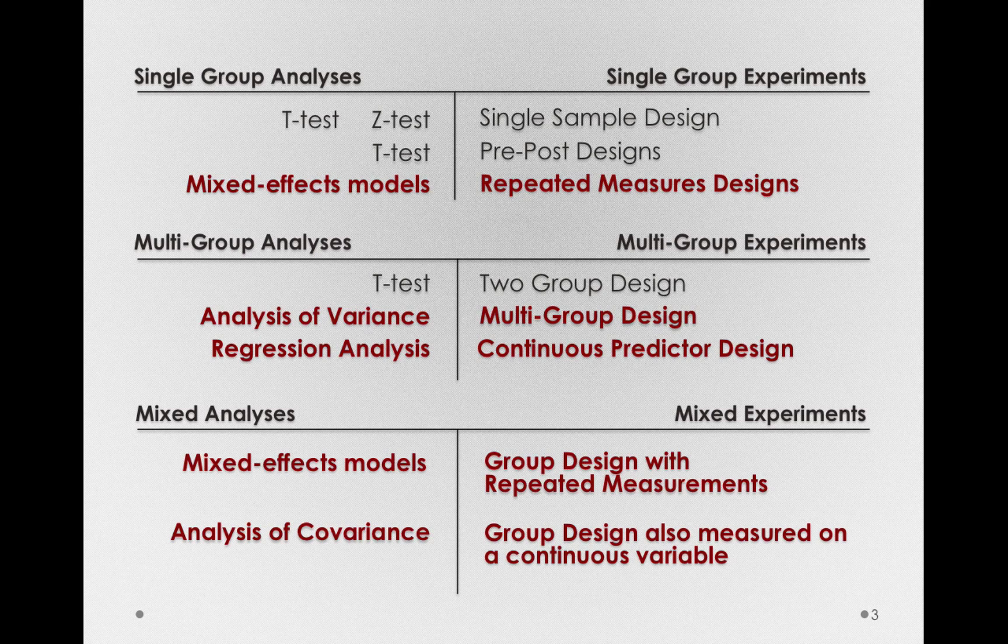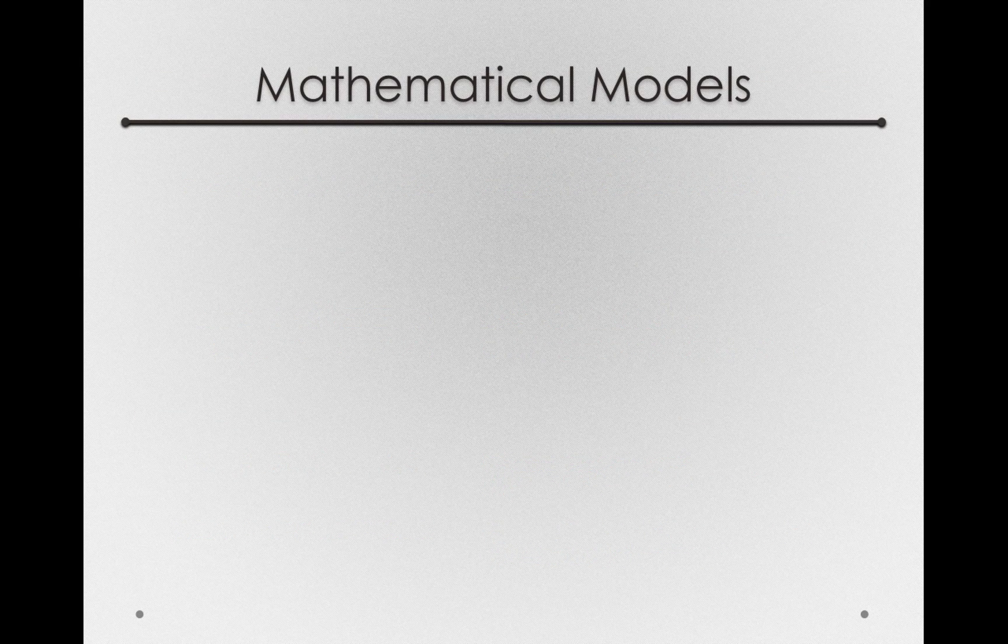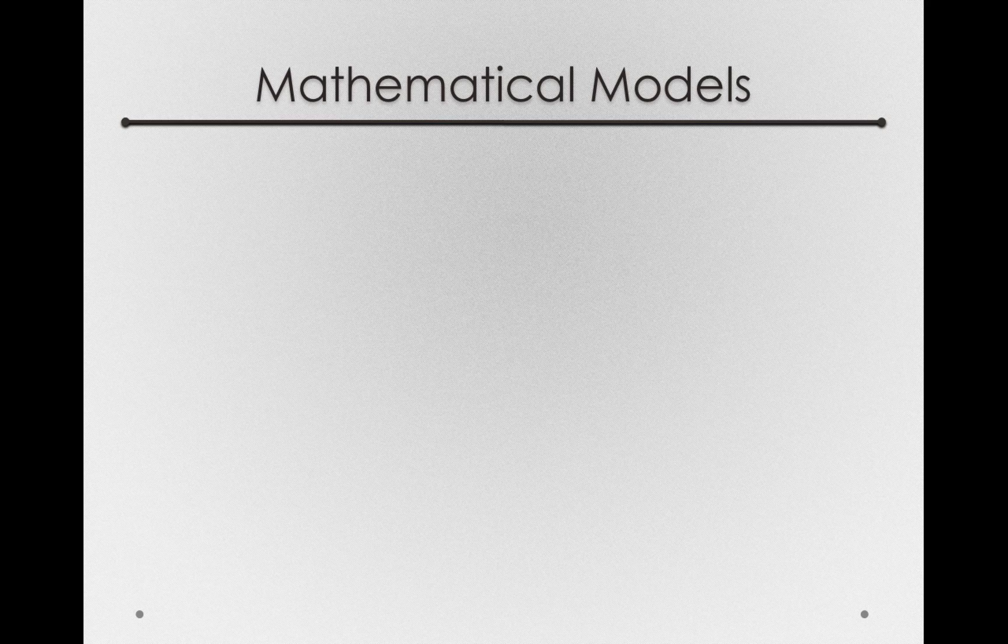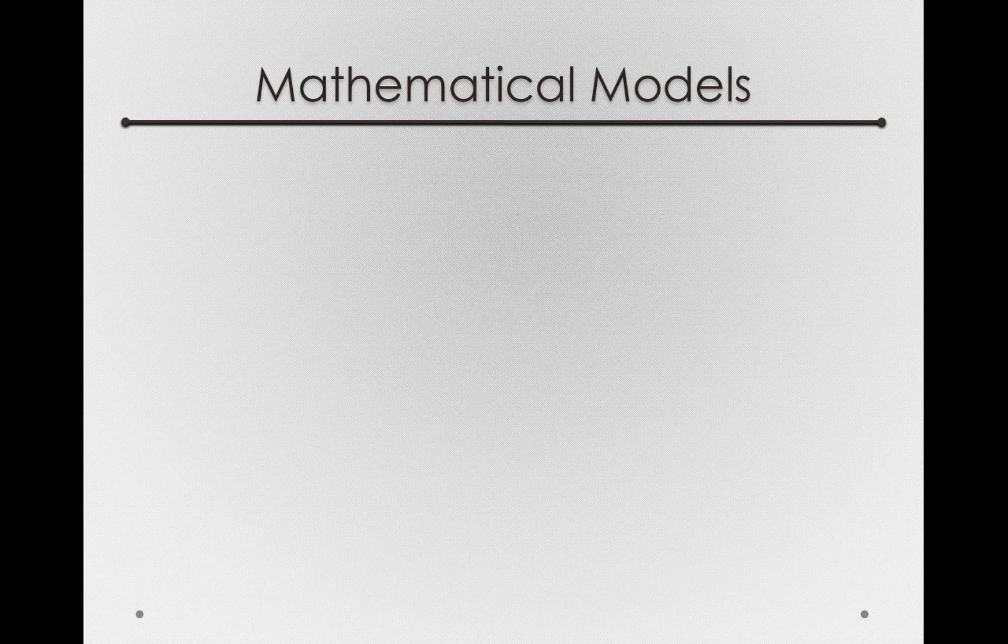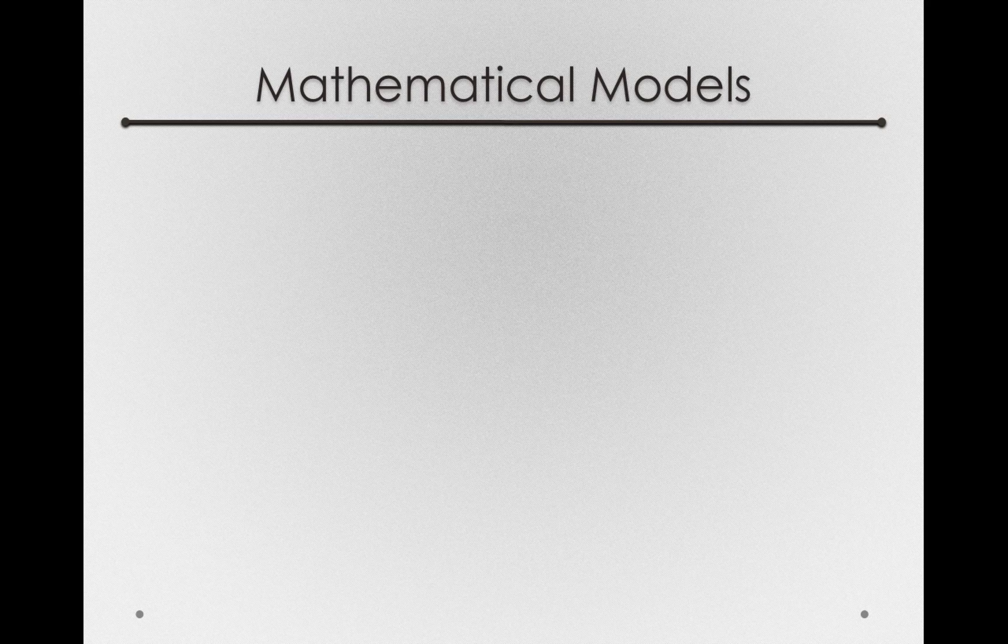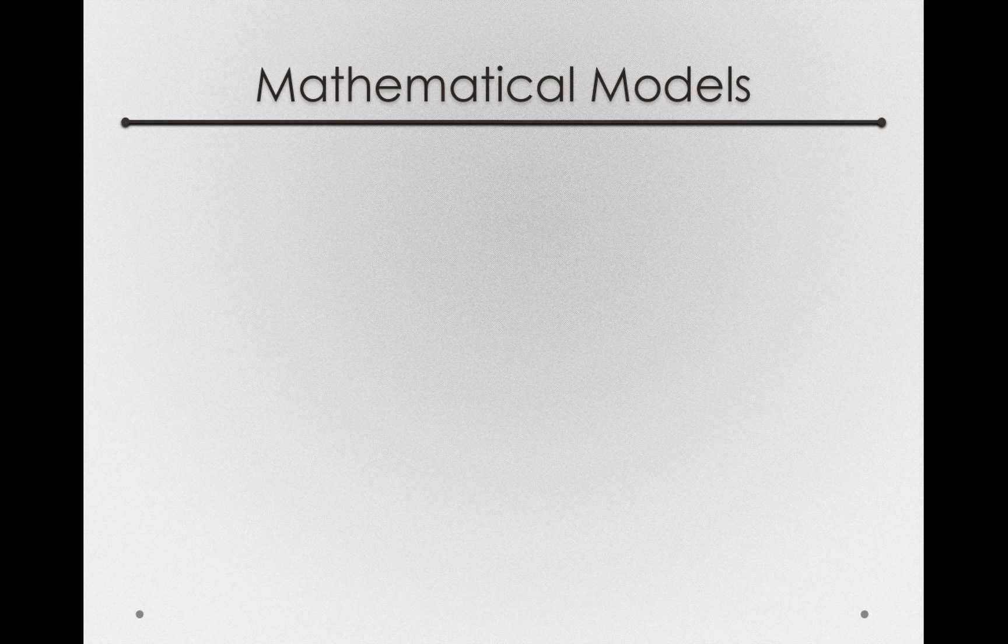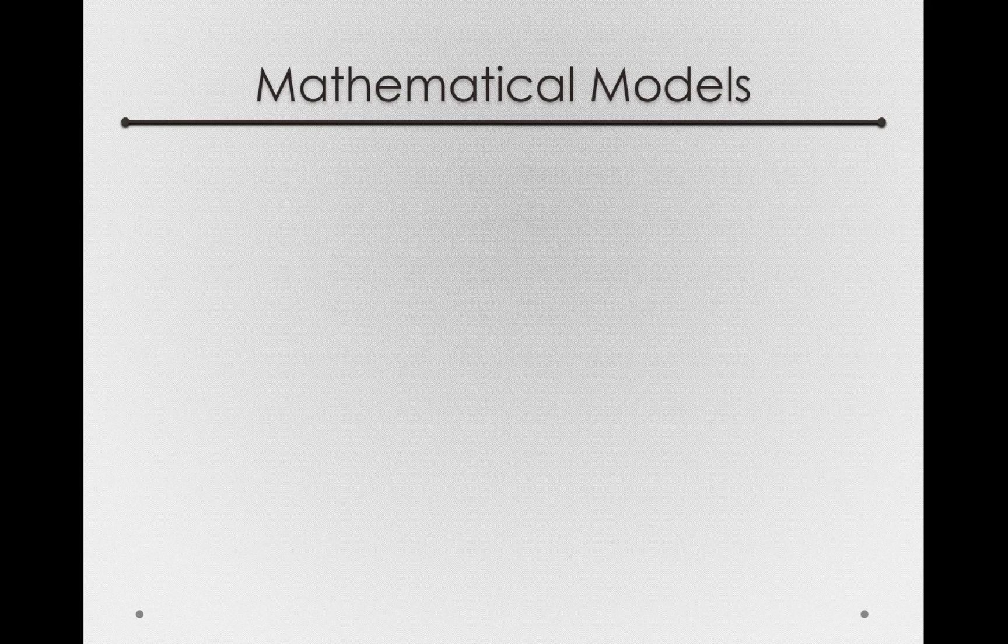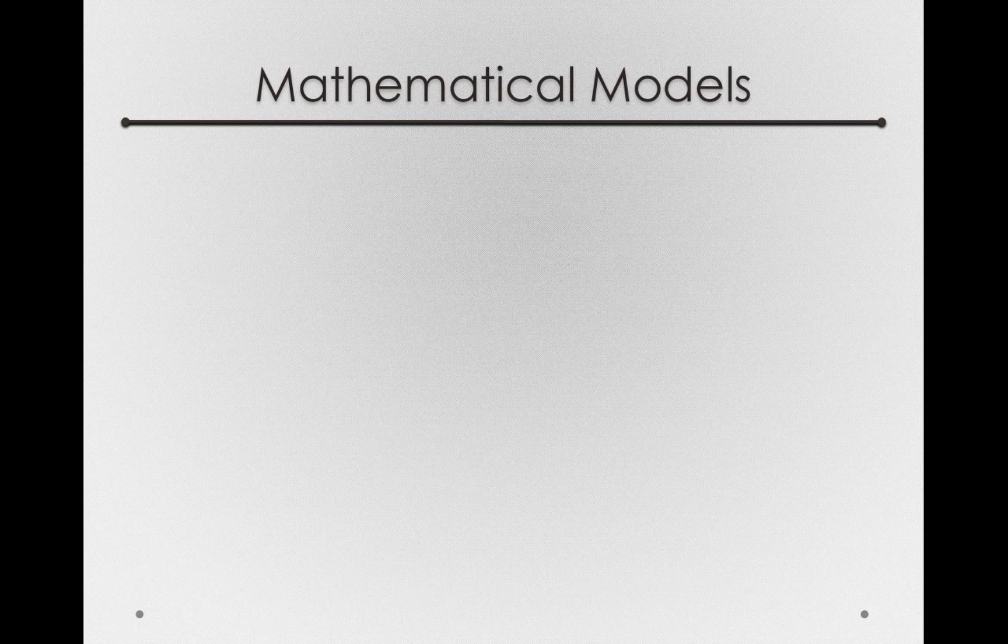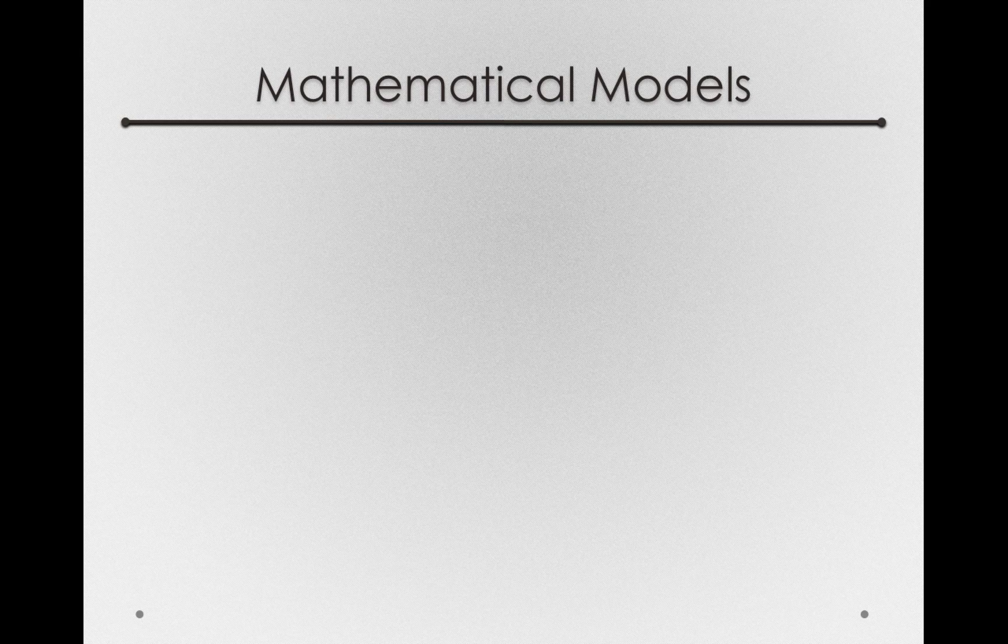Now all of these different models will require a mathematical description of our actual data, which gets us into the domain of mathematical models. In this upcoming module, we'll have a lot of mathematical descriptions of our data. But remember, we're simply designing these models as a way to make an inference about a population. So all that we're doing with our modeling is a way to describe what we have observed to make an inference about what we haven't observed. So all of our mathematical modeling is really in the service of making an inference about a population.